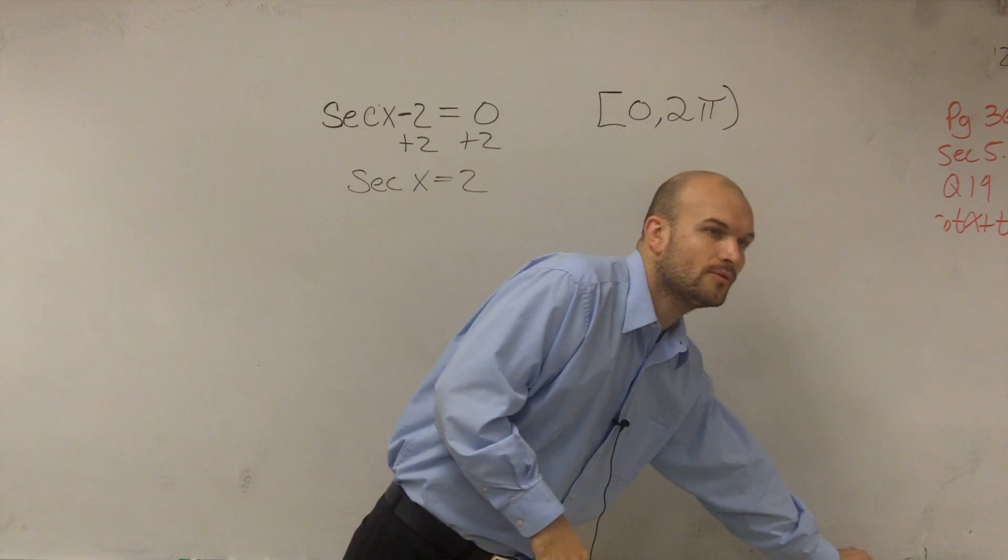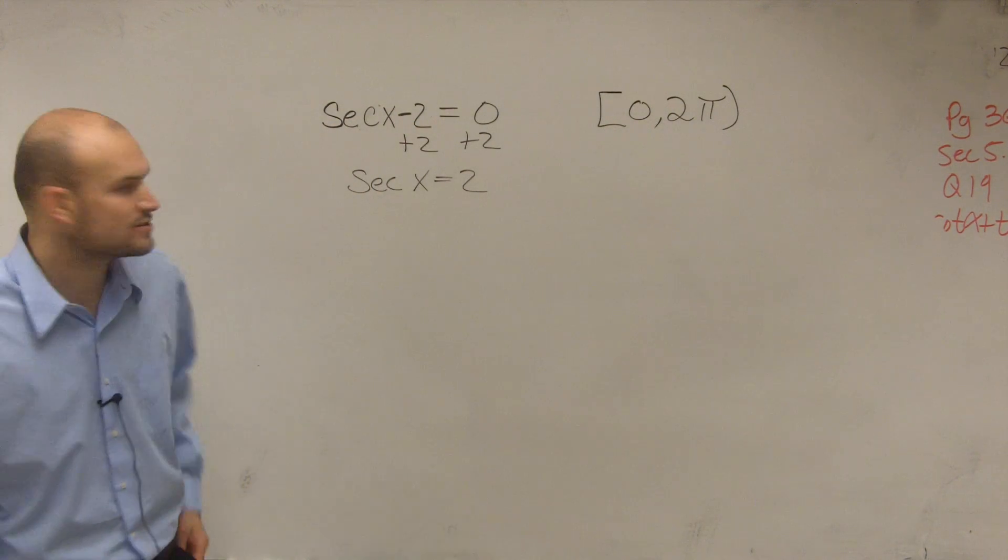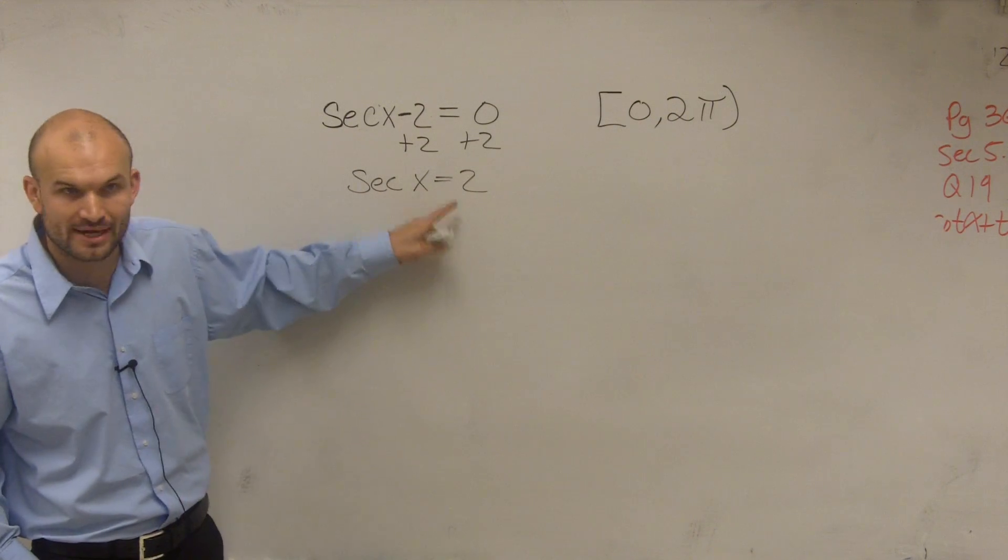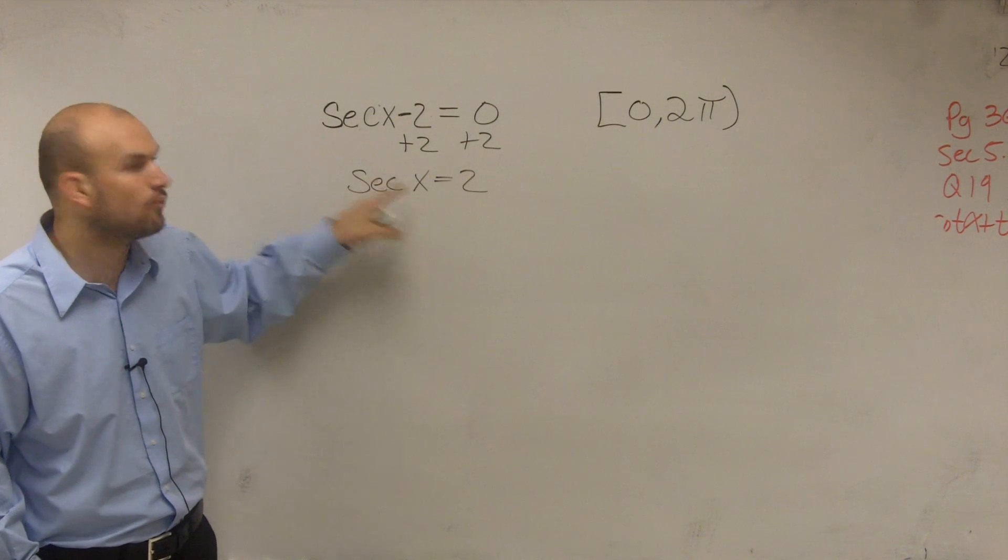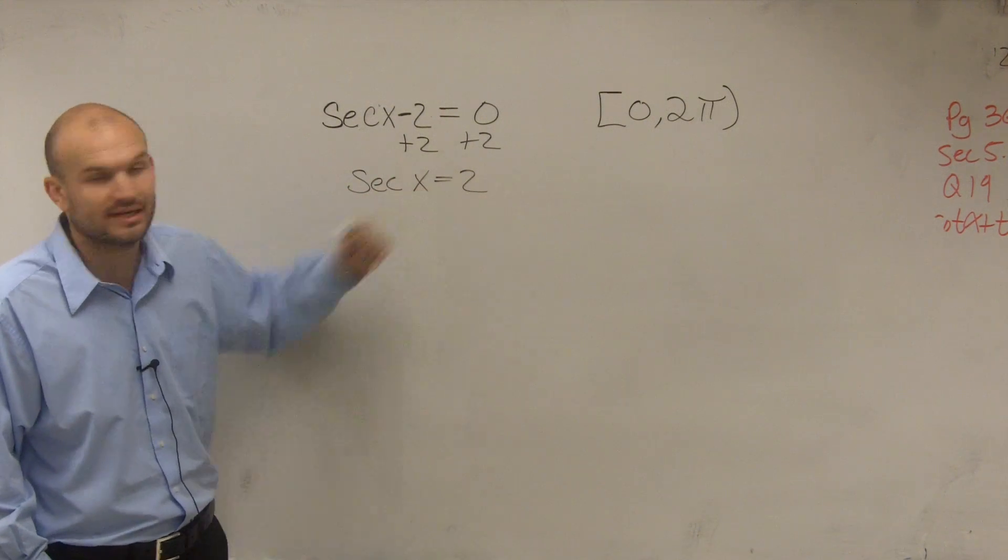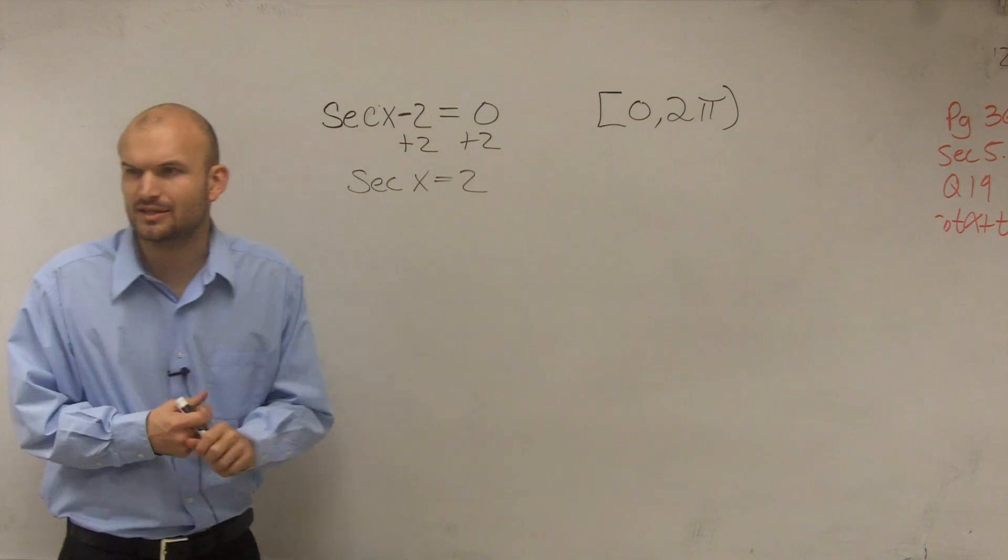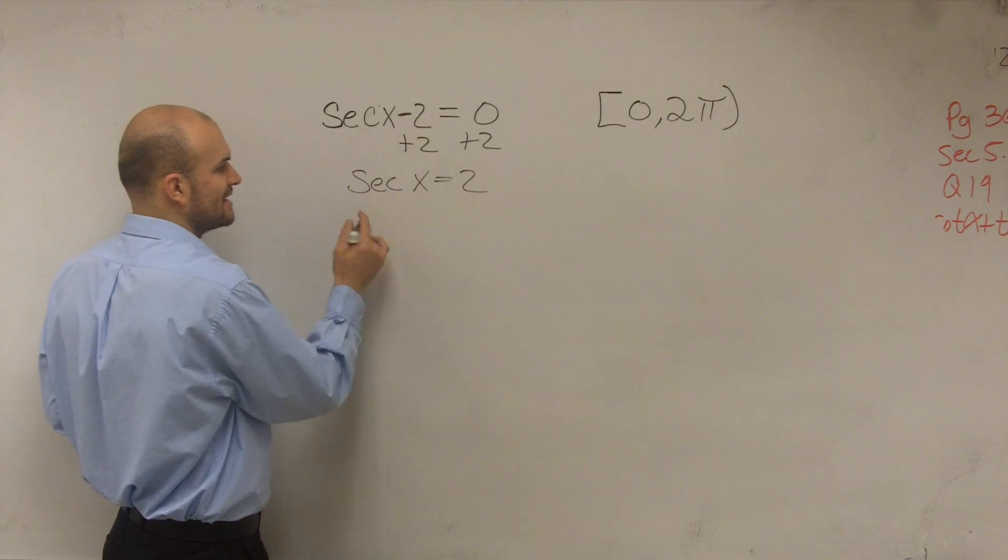Now we need to find the value where secant of x equals 2. What we want to do is find the angle, right? Secant of an angle equals 2. So I need to find what angle, when I take the secant of it, equals 2. We need to remember what exactly is the secant function.